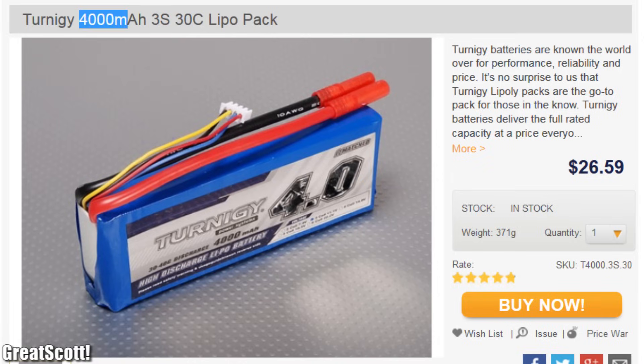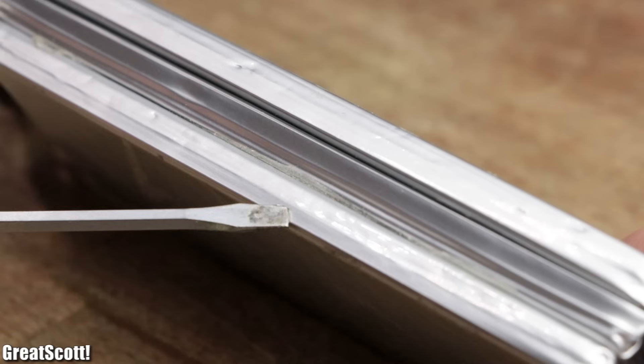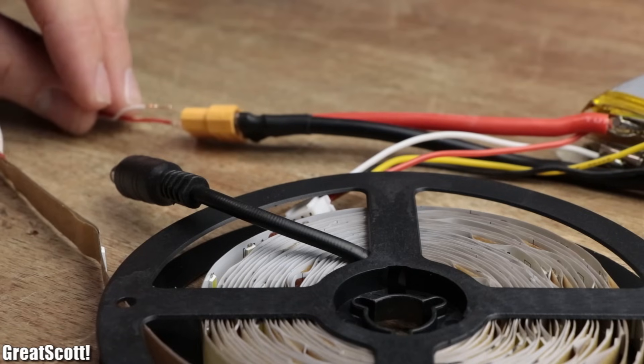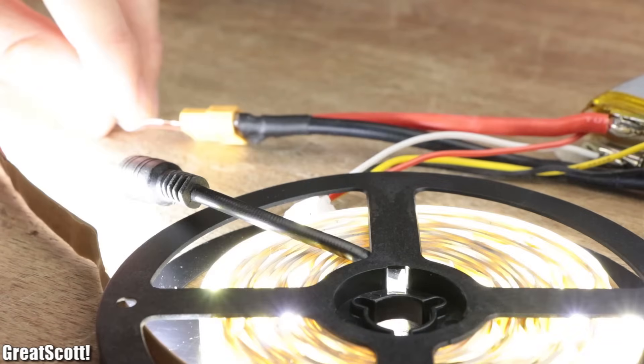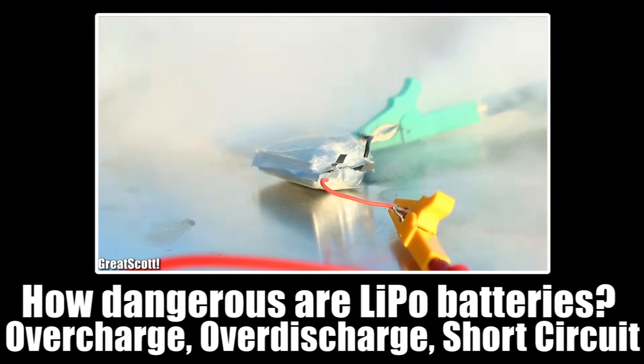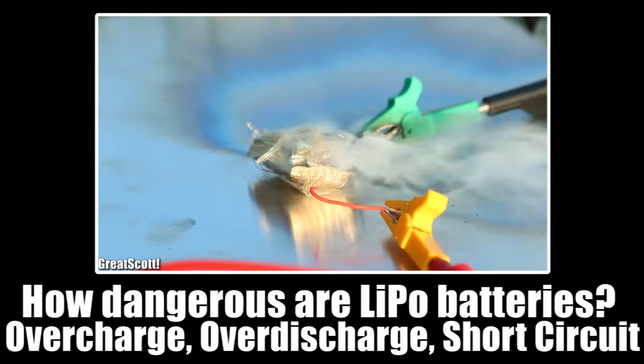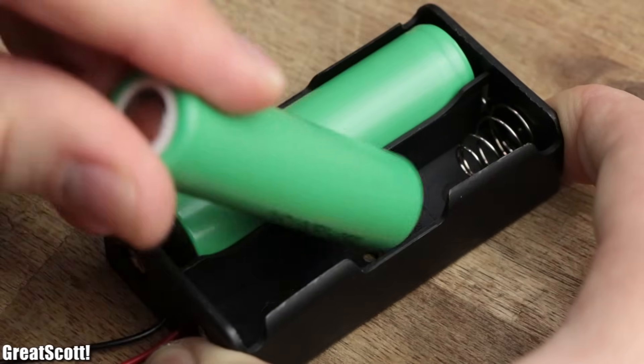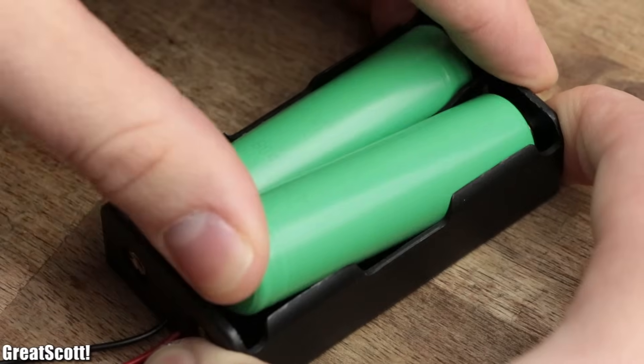The advantage of lithium polymer batteries though is that you can easily get them in pre-made packs that feature multiple cells and thus possess a high enough voltage to power the LED strip directly without boosting the voltage. Only problem is that LiPo batteries can be a bit dangerous if you're not careful. So wouldn't it be useful if we could combine common 18650 lithium-ion cells in a similar pack?